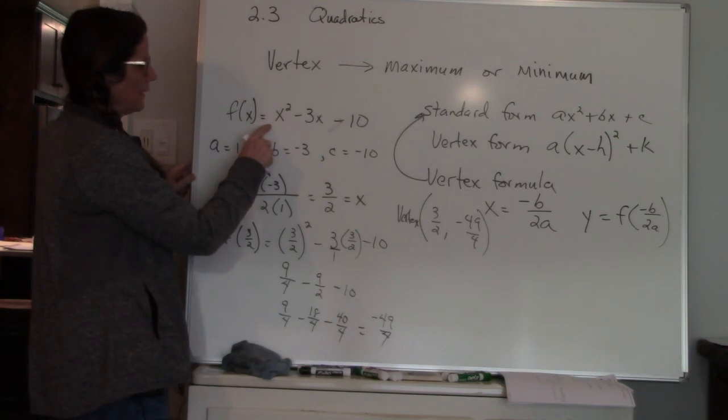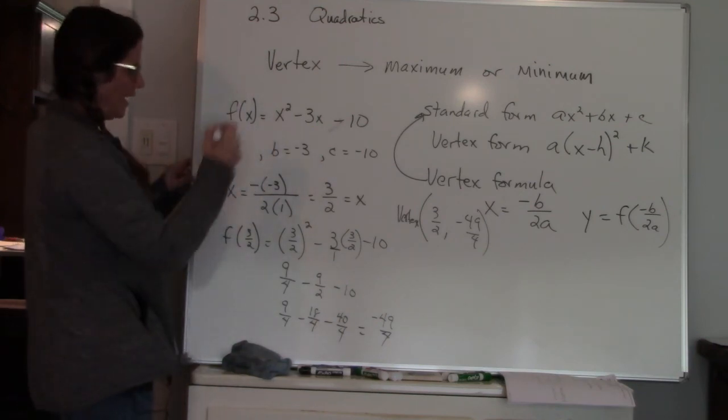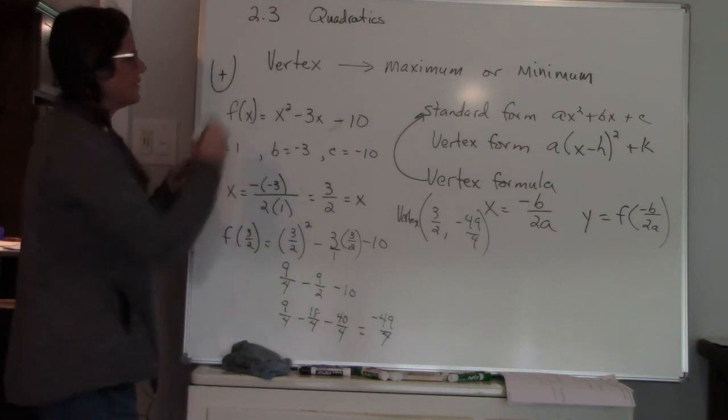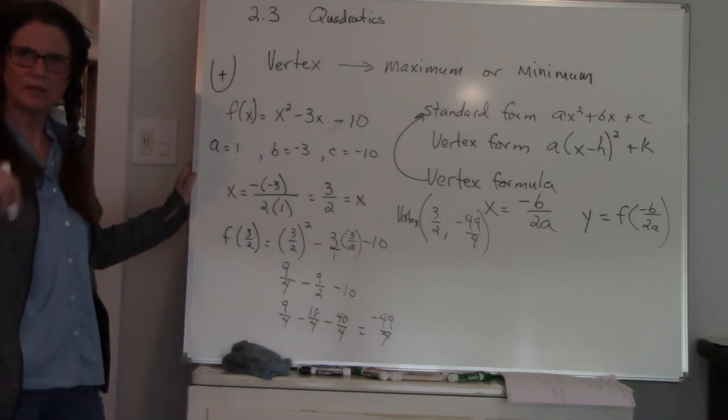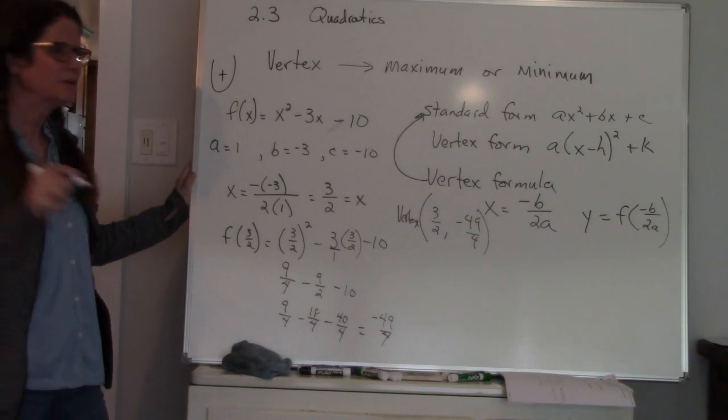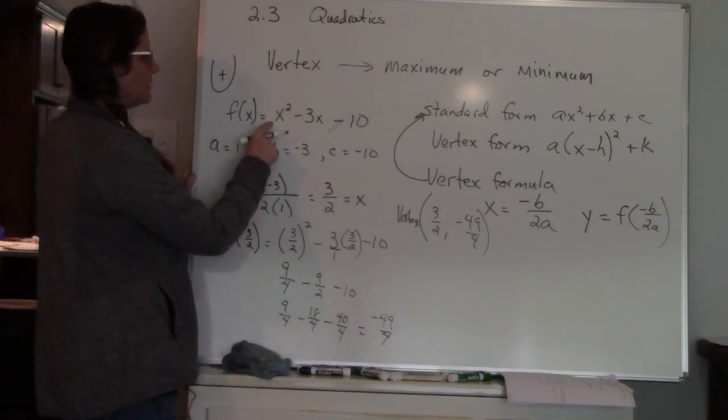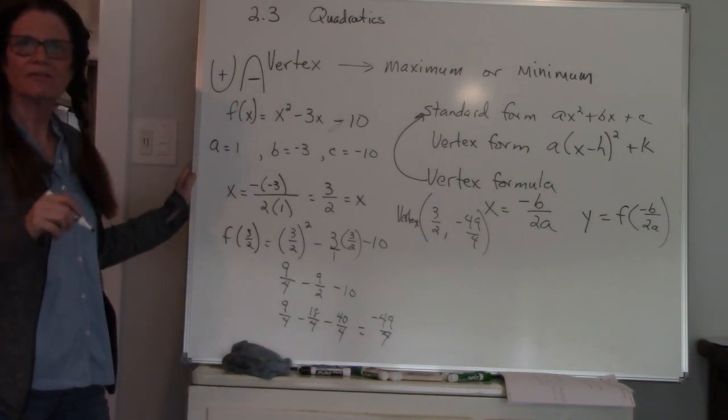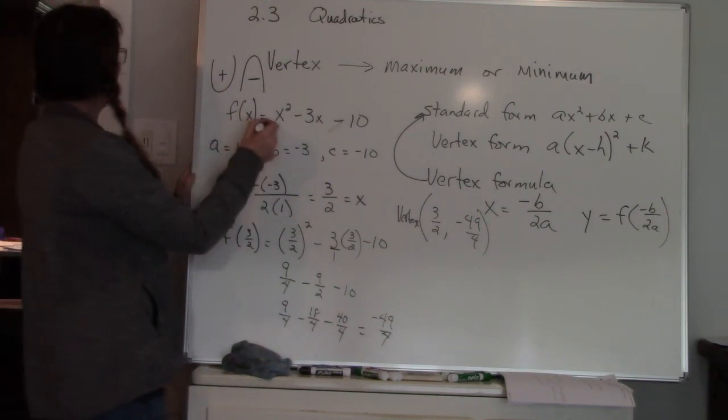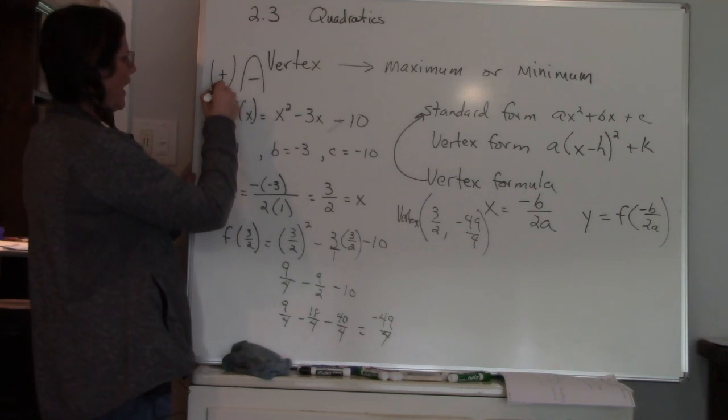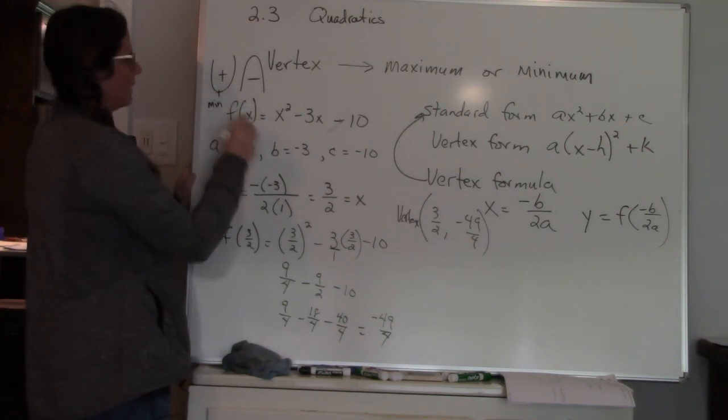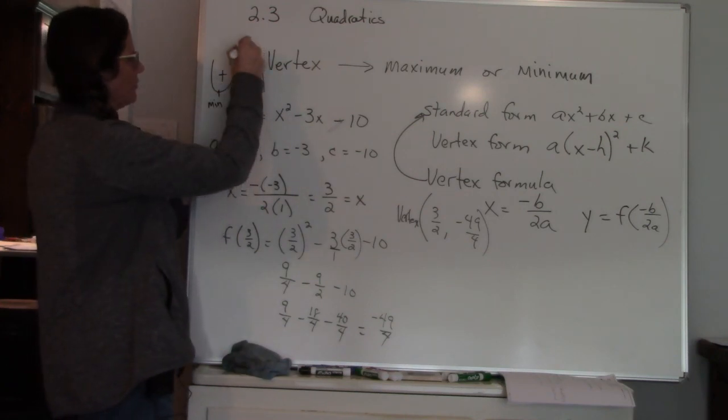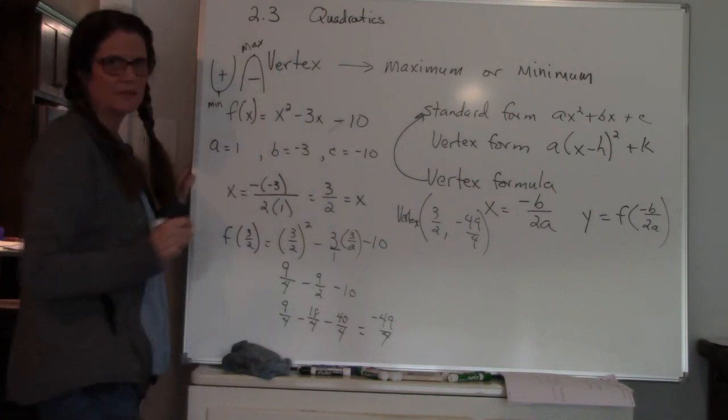x squared term—if this first x squared term is positive, I have a parabola that's happy, it's a smile, it opens up. If this first term is negative, I have a parabola that's sad, it's got a frown. So if my first term is positive I have a minimum. If my first term is negative I have a maximum.